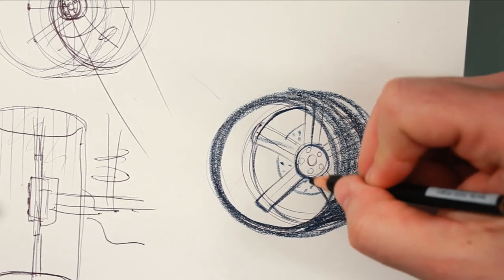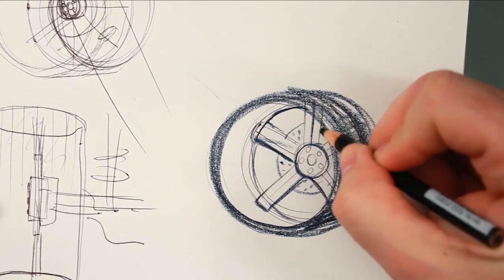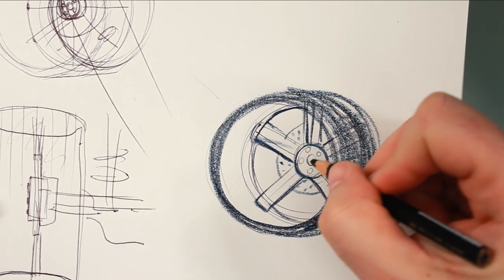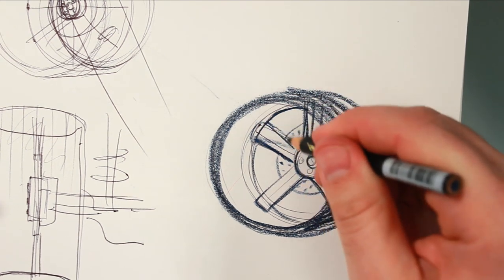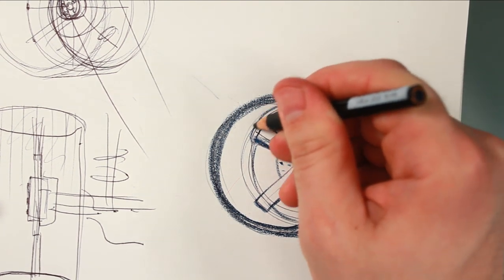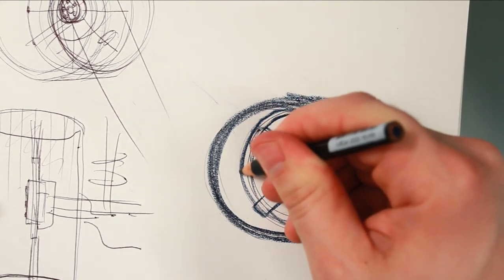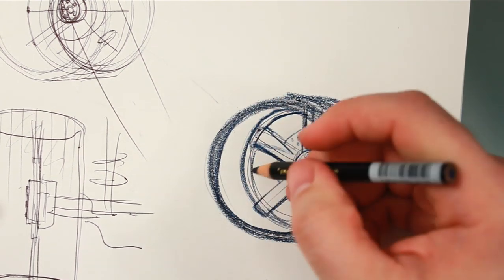And then in a future video, we'll talk about shading these and rendering them in chrome and all that sort of thing. You don't have to draw the five point lugs, but it helps to space it out. And then we'll just give a hint at an additional line right there. And that's it.